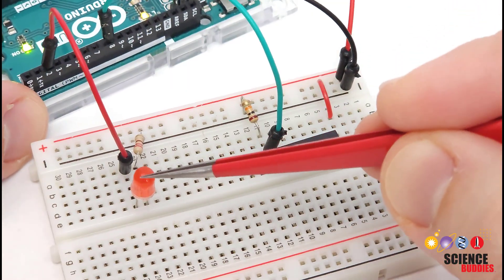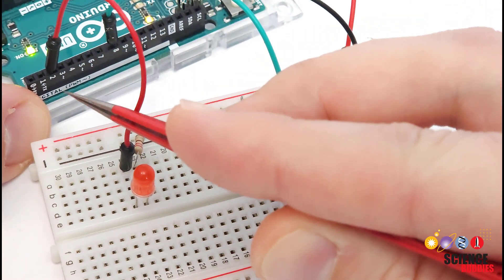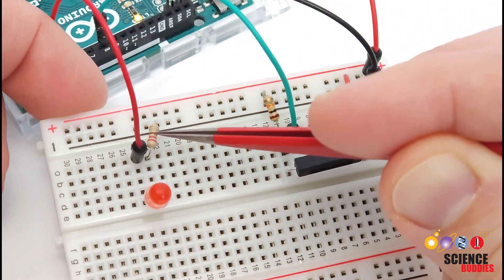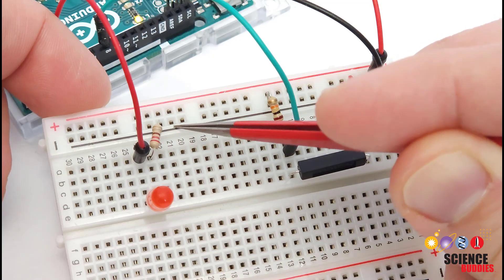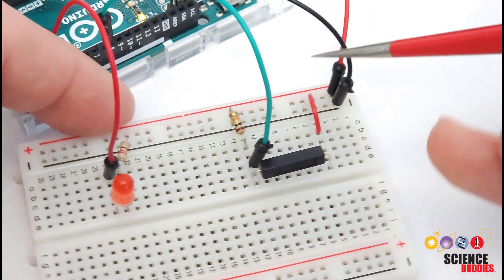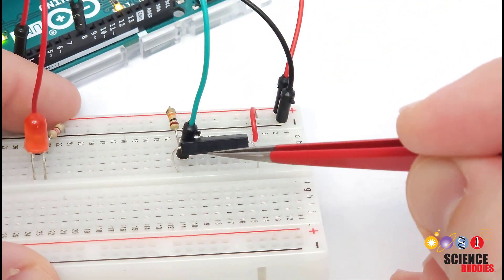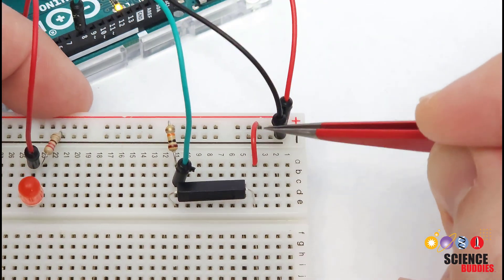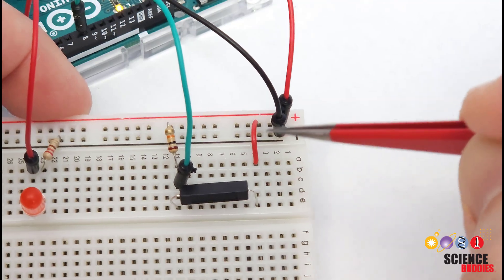On the breadboard here, I have an LED connected to Arduino pin 2 with a 220 ohm current limiting resistor in series with the LED going to ground. And then I have my reed switch, so the switch has two pins in two different rows of the breadboard. One of those pins goes to 5 volts from the Arduino.